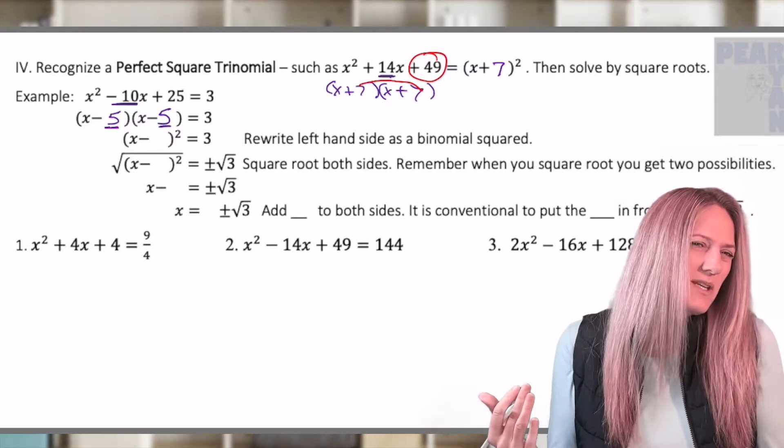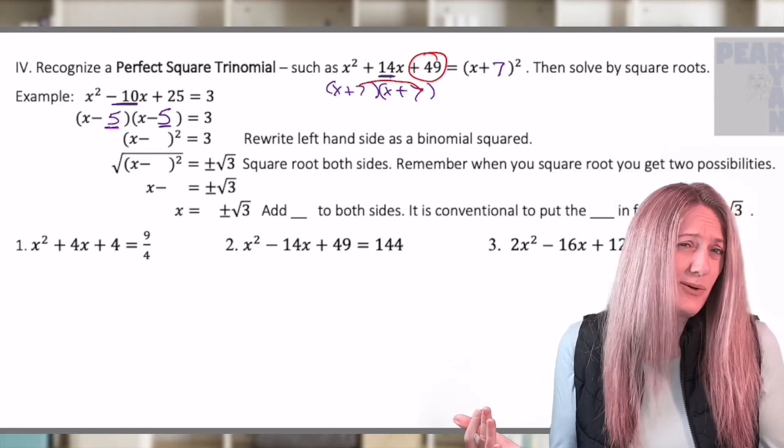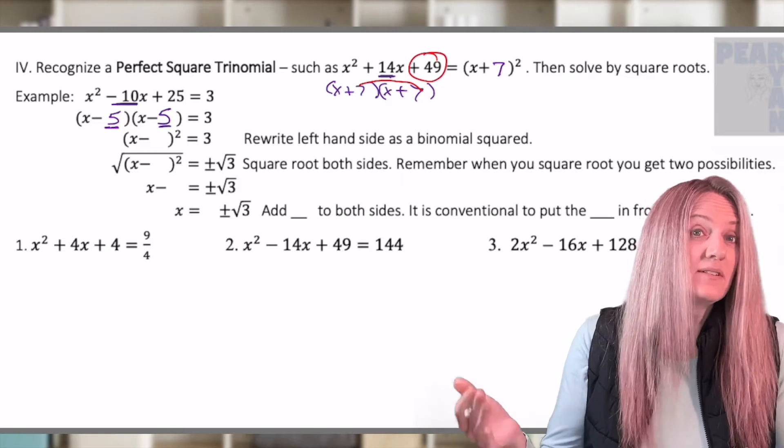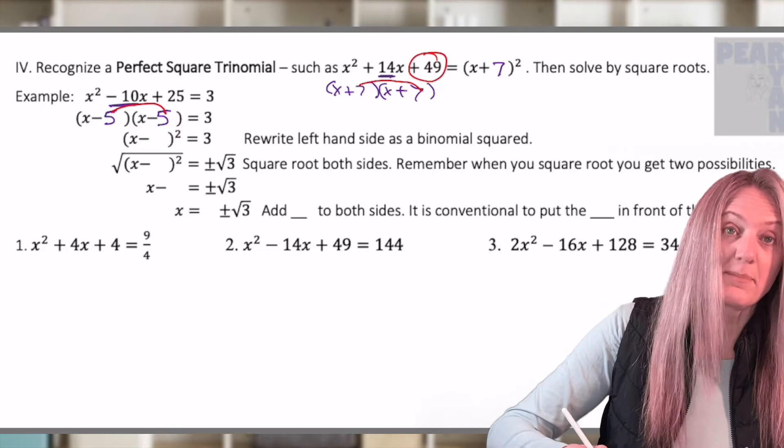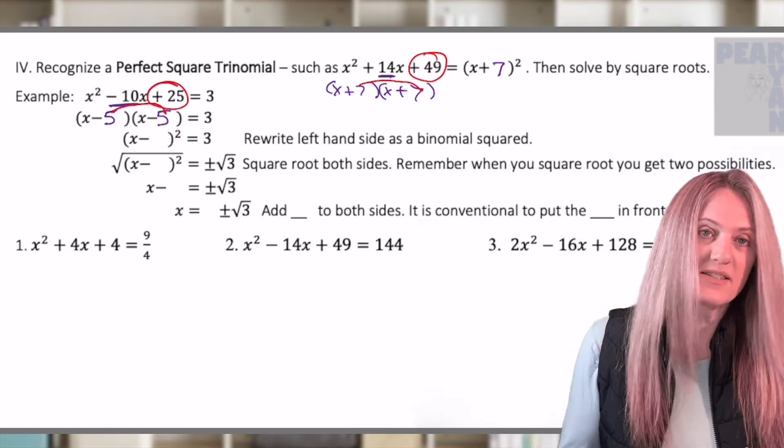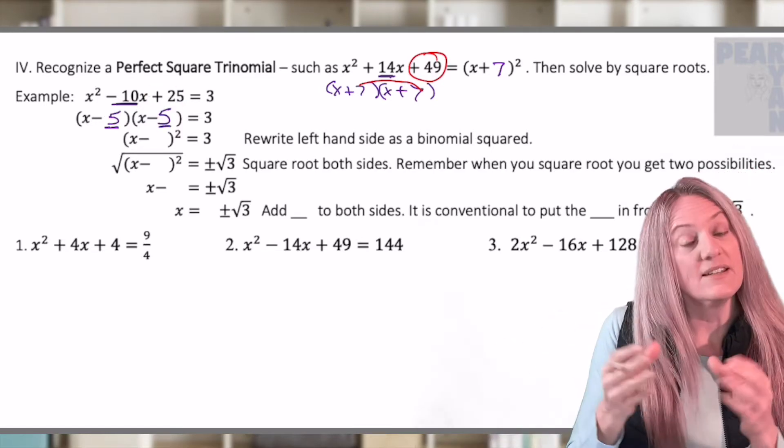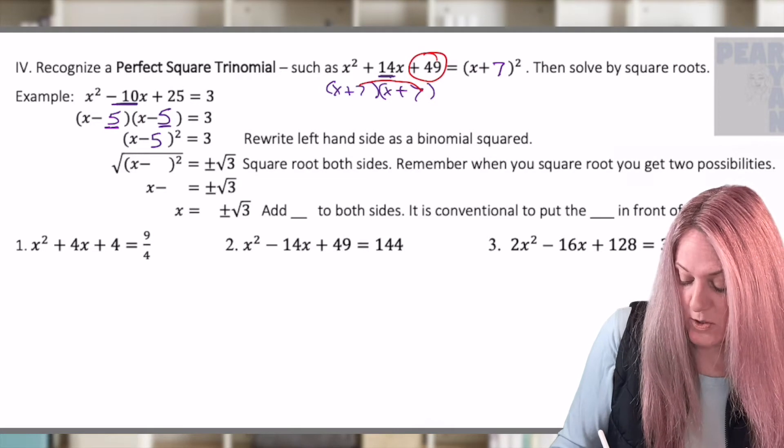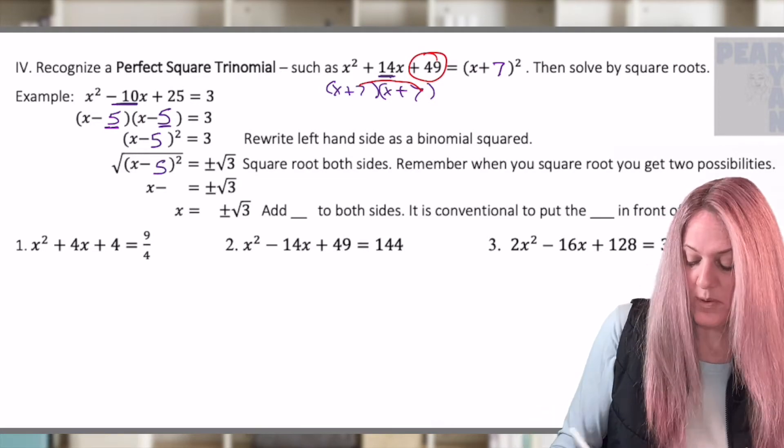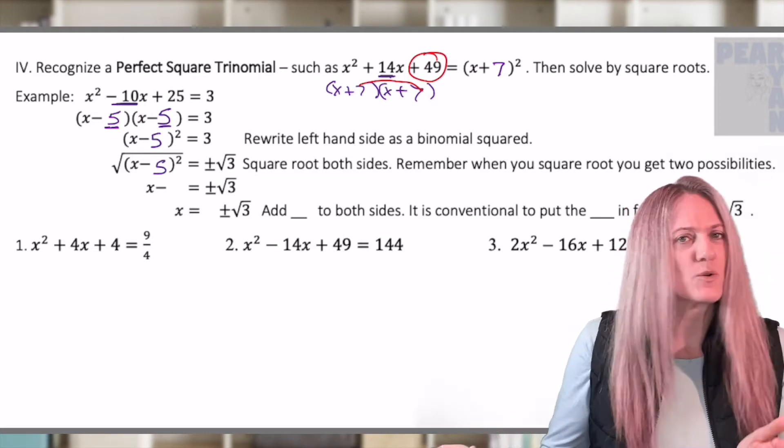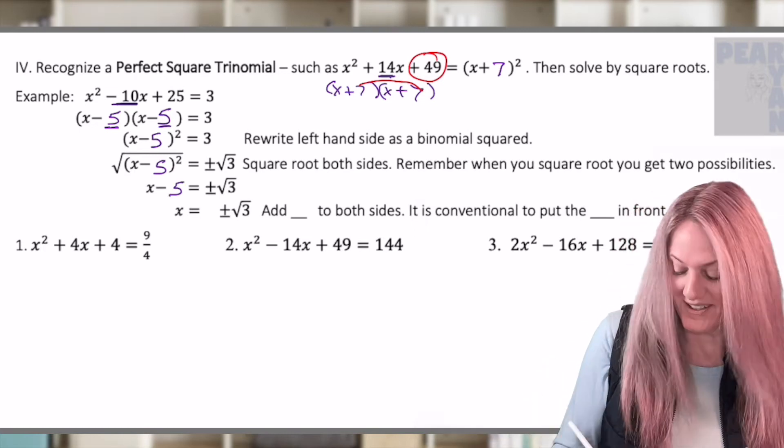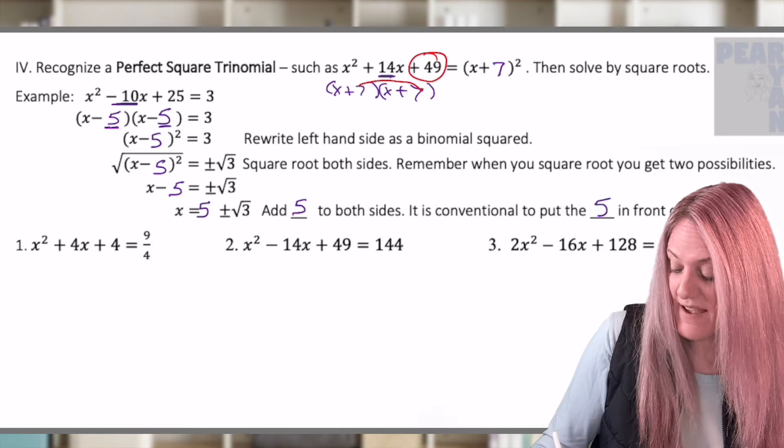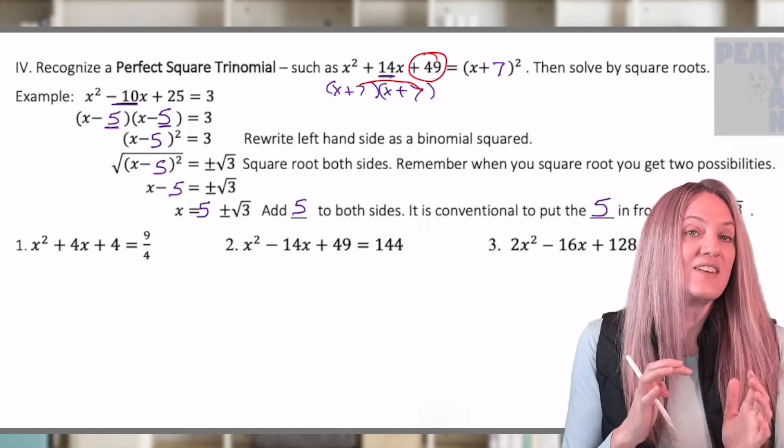So really, what are we doing there? 10 divided by two, right? Five plus five, 10. Where's the 25 coming from? Well, of course, multiplying the negative five times negative five. And that gives me positive 25. Then I'll condense, rewrite it as a binomial squared. At that point, we're just back at last lesson. Square root both sides. And last step, we'll add the five over. It is conventional to put that five in front of the positive negative root three.